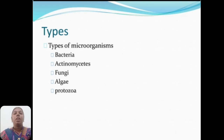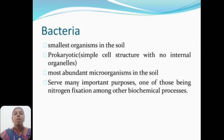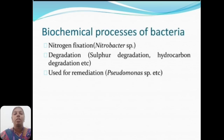Types of microorganisms: bacteria, actinomycetes, fungi, algae, and protozoa. Bacteria are the smallest organisms in the soil, they are prokaryotes and the most abundant microorganism in the soil. They serve many important purposes, one of those being nitrogen fixation among other biochemical processes.